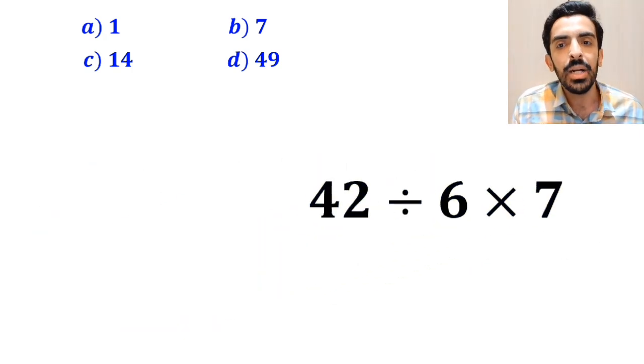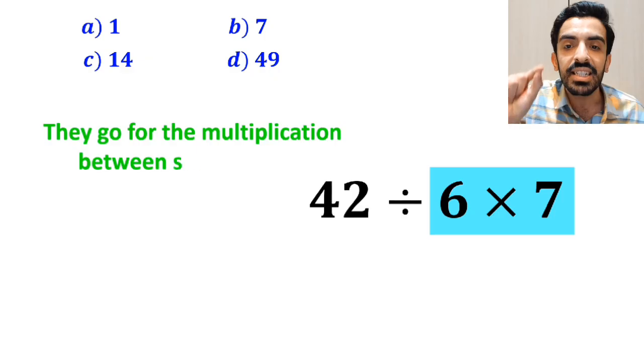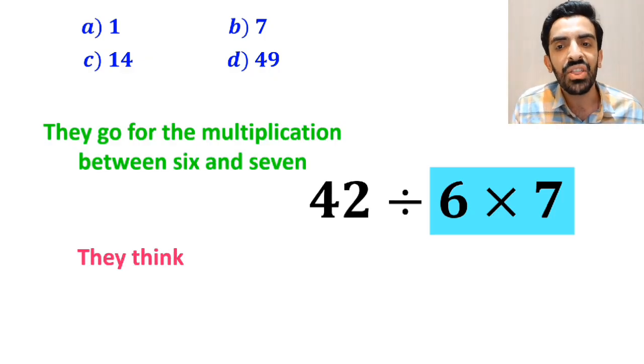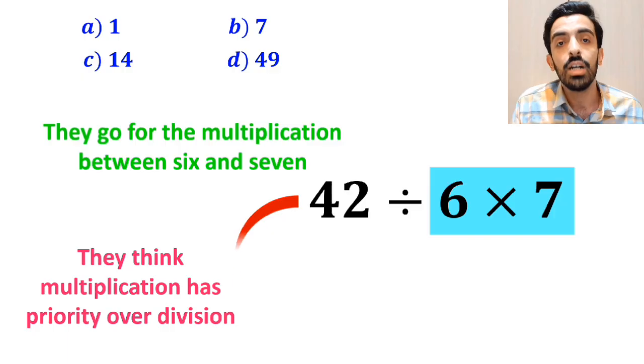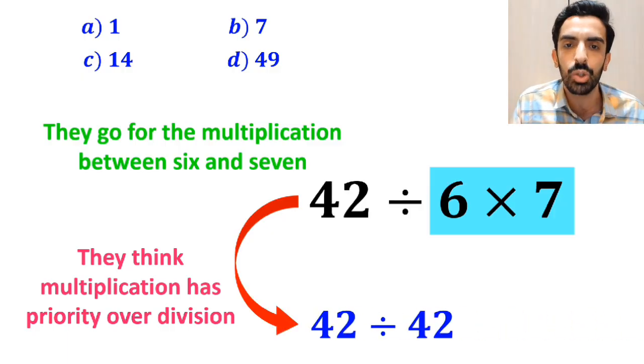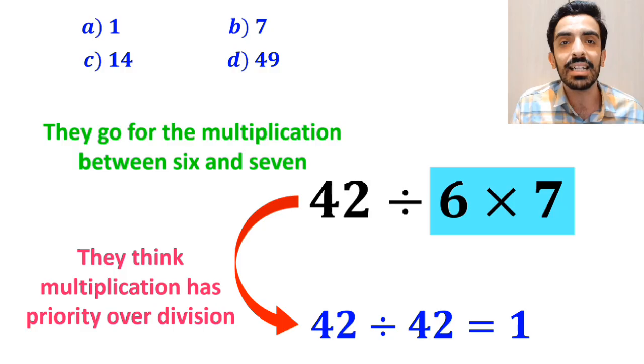In the next step, they go for the multiplication between 7 and 6 because they think multiplication has priority over division. So, this expression simplifies to 42 divided by 42, which finally gives them the answer 1.